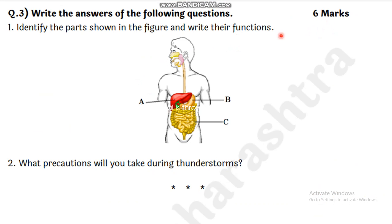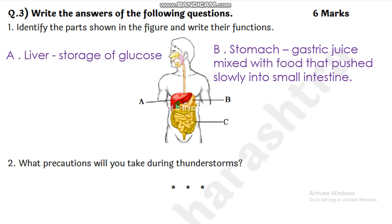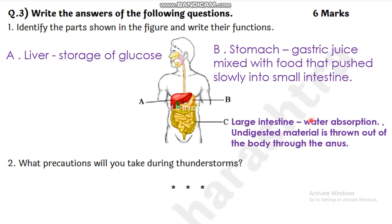Last question is 6 marks means 2 questions, each question has 3 marks. Identify the parts shown in the figure and write their functions. This red part here is the liver, and its function is storage of glucose - it is the main function of liver. Next is part B, this is the stomach. The gastric juice is secreted in the stomach that is mixed with the food and pushed slowly into small intestine. In the periphery of small intestine, there is a third part C. This is the large intestine. Here water absorption takes place, and the undigested material that cannot be digested further is thrown out of the body through the anus.